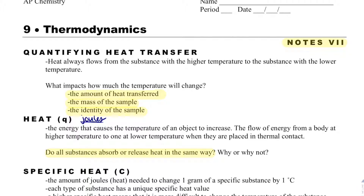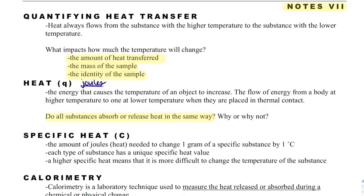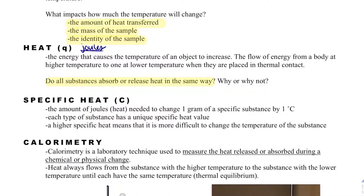The value we're going to use specifically for each different compound or molecule is the specific heat value. That is a value of how much heat is needed to change one gram of the substance by one degree Celsius. So specific heat has some number value, and its units are joules divided by grams degrees Celsius.